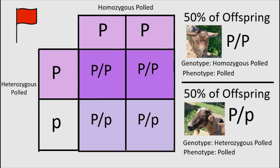The fifth pairing is a homozygous polled goat crossed with a heterozygous one. Again, this pairing is also a huge red flag as it has a higher risk of producing hermaphrodites. In this pairing, 50% of the offspring should be homozygous for the polled allele, and 50% should be heterozygous for the polled allele. 100% of the offspring will be polled. You will likely not be able to tell whether kids are homozygous or heterozygous for the polled allele without test breeding them when they are older.